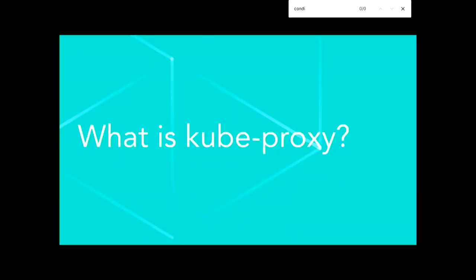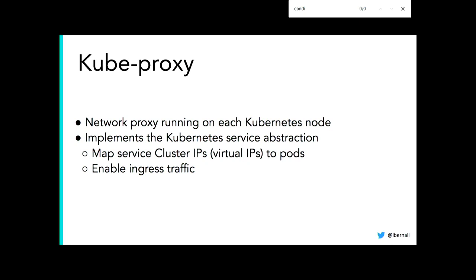Some very quick background on kubeproxy itself. Kubeproxy is a component responsible for managing the service abstraction in Kubernetes. It runs on every node and enables access to a cluster IP, which is a virtual IP from that node. Basically, when you try to access a service, you try to access this virtual IP, and kubeproxy is responsible for transforming that IP into a pod backend.